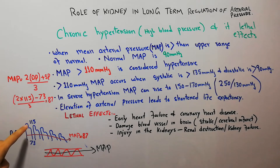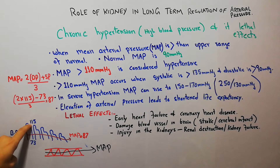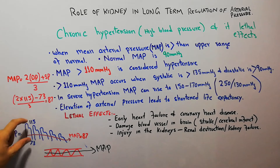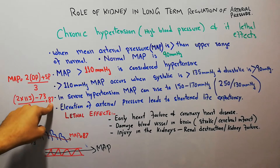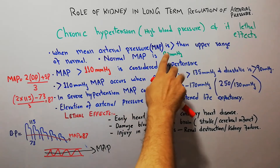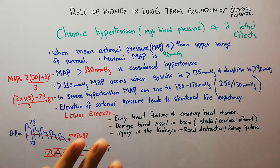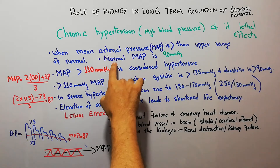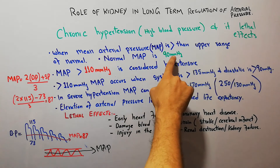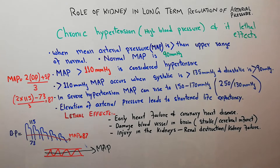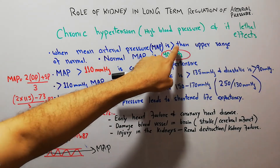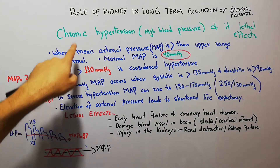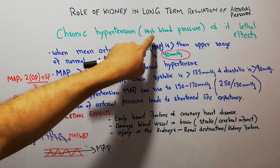For example, if systolic pressure is 115 and diastolic pressure is 73, putting these values into the equation gives a MAP of approximately 87 millimeters of mercury, which is almost normal. The upper range of normal MAP is 90 mmHg. If MAP exceeds this, it is defined as chronic hypertension or high blood pressure.